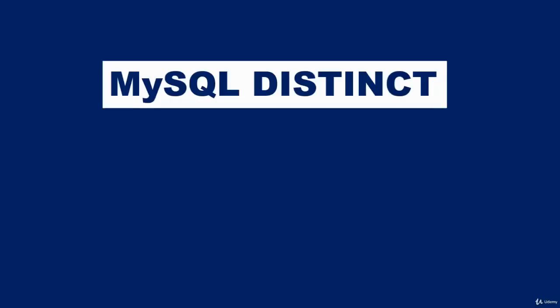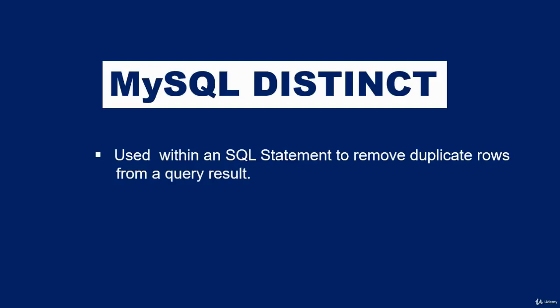The DISTINCT keyword is used within an SQL statement to remove duplicate rows from the result set of a query. When you execute some SQL statements, the result may contain duplicates — to remove them, include the DISTINCT keyword in your statement. Note that DISTINCT does not remove duplicates from the actual table — it only removes them from the query result output.